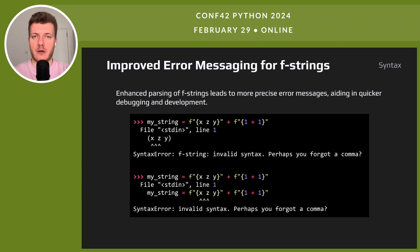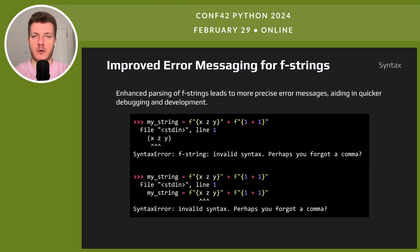With Python 3.12, f-strings get better at showing where errors are. Debugging f-strings is now quicker, thanks to clearer error messages. Here is an example of an error in an f-string — the message points exactly to where the mistake is. It even suggests you might have forgotten a comma. This precise feedback makes fixing errors faster.